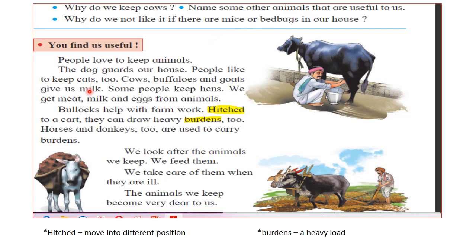People love to keep animals. The dog guards our house; people like to keep cats too. Cows, buffaloes and goats give us milk. Some people keep hens — we get meat, milk and eggs from animals. Bullocks help with farm work, and hitched to a cart they can draw heavy burdens. Horses and donkeys are also used to carry loads. We look after the animals we keep — we feed them and take care of them when they are ill. The animals we keep become very dear to us.